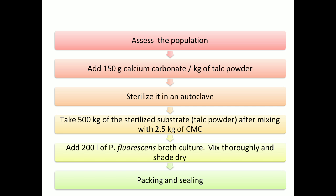Add the inoculum at the rate of 1 liter per 200 liters of media and incubate for 2 days. Then check the population of the prepared product with the help of a hemocytometer. For pH adjustment, add 150 grams of calcium carbonate per kg of talc powder, then sterilize in the autoclave for 30 minutes at 15 psi. Then take 500 kg of sterilized talc powder and mix with 2.5 kg of CMC, which acts as a sticker.